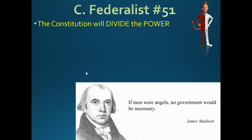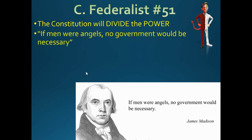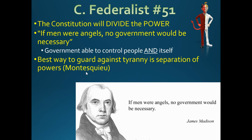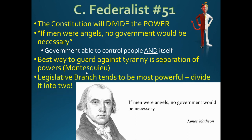Make a note card on Federalist 51. The Constitution will divide power — between the states and the national government, and divided among the separate branches (Montesquieu's separation of powers) — and that will lessen tyranny. Separation of powers is basically what Federalist 51 is about. The legislative branch, which tends to be the most powerful, is also divided into two chambers — bicameral — the House and the Senate.